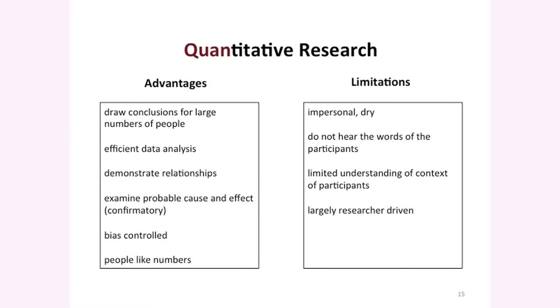Both methods have advantages. Take quantitative research — it's really useful for studying large numbers of people across a wide geographic area. It's a very efficient method of data collection. We can look at the relationships among concepts or variables, even look at cause and effect. We can control for bias carefully, and people tend to like numbers. But there's a downside: quantitative research tends to be impersonal and dry. We really don't hear the words of participants, often we don't go out to the actual setting where things are occurring, and it's largely driven by the researcher.